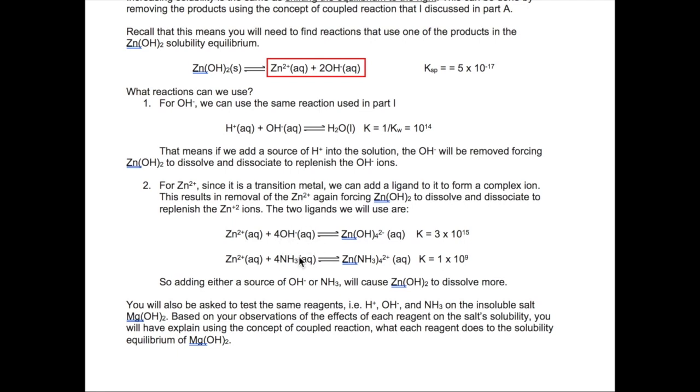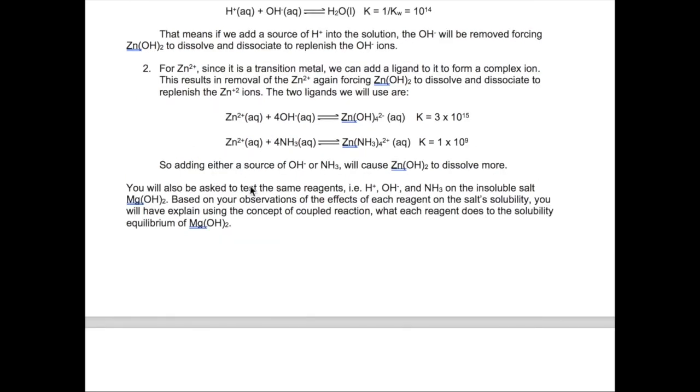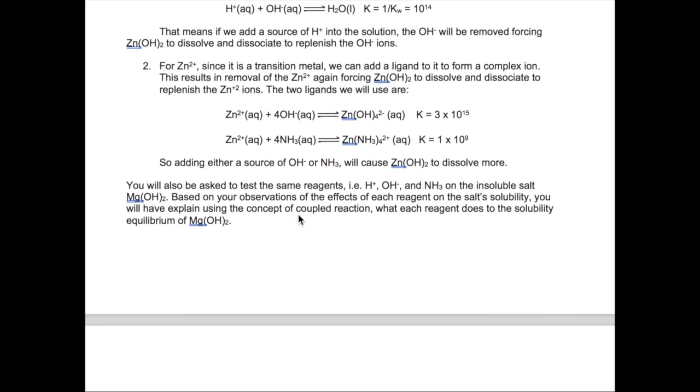The idea is that if we add these ligands, we will deplete the zinc ion because of the complex ion reaction. And because the zinc ion is depleted, this will force the solid to dissolve and dissociate to form more zinc ions to regain equilibrium. Now later on, you will also be asked to test the same reagents, H+, hydroxide and ammonia, on the insoluble salt magnesium hydroxide. And your goal is to make observations and see if these three reagents have the same effect on that precipitate.